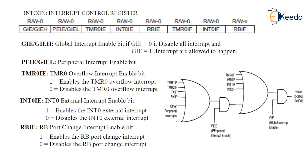In a microcontroller, there are two types of interrupts: masked and unmasked. In masked interrupts, we can disable the interrupts. In unmasked interrupts, the microcontroller has to attend to or assign a priority to that interrupt.